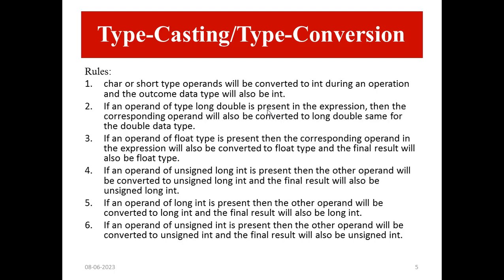Same applies for the double data type. If an operand of type float is present, then the corresponding operand in the expression will also be converted to float and the final result will also be float. If an operand of unsigned long int is present, then the other operand will be converted to unsigned long int and the final result will also be unsigned long int. Similarly, if an operand of unsigned int is present, then the other operand will be converted to unsigned int and the final result will also be unsigned int.